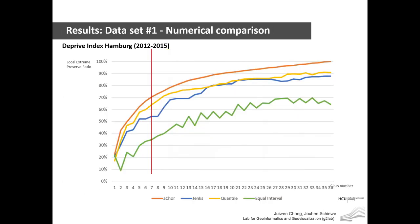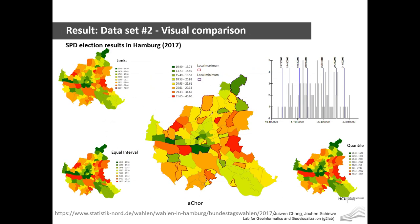The preservation rate chart shows, with increasing number of classes, how the preservation rate changes. The orange line — ACOR — consistently has the best preservation rate regardless of whether there are relatively few or many classes. Another dataset shows the SPD vote percentage in Hamburg from last year's election — a more diverse dataset since people don't necessarily cluster where they vote. ACOR shows a more significant result especially with a relatively lower number of classes.